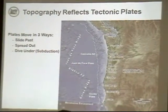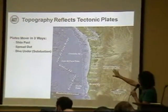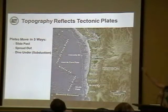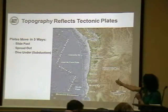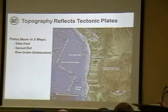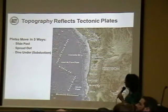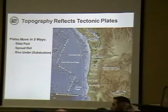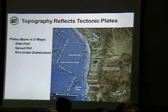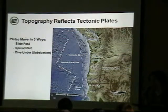Here's a really cool image of the Oregon coast. You can see Oregon, Canada up here, and the topography off the coast. There's a smooth area with a dashed line along the Cascadia subduction zone, right off the Oregon coast — getting closer to shore near Gold Beach and Crescent City. Tectonic plates move in three ways: they slide past each other, they spread out, and they dive under. That diving under is called subduction, which is what we're going to talk about.